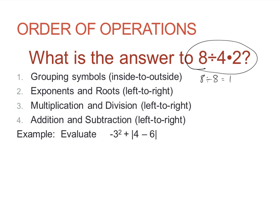But if you do the division first, you get eight divided by four, that's two times two, you get four for an answer. Clearly, we can't have two answers. So order of operations is a way for us to decide which way we're going to do all these problems, so we're all doing them the same way.